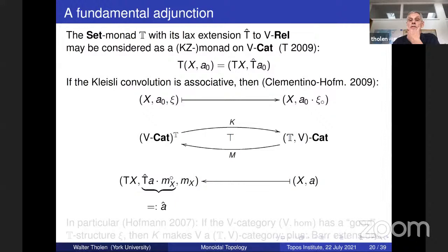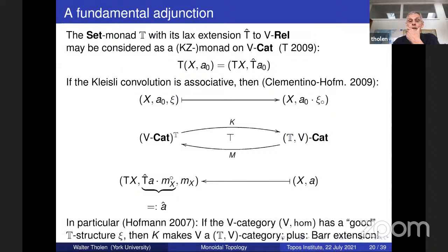And now you see, since V is a V-category, once you have a Xi, a good structure Xi on this, you can go to the right-hand side and make V a TV-category. But there's much more to this. It's all in this nice paper by Hofmann in the Advances that actually produces everything out of this T-structure Xi, including the lax extension itself.